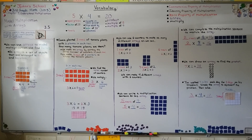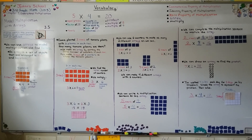So we can model multiplication with arrays that have rows for the groups and columns for how many are in each group. We're going to learn about the commutative property of multiplication in our next lesson, and I hope I'll see you there. Have a wonderful day!